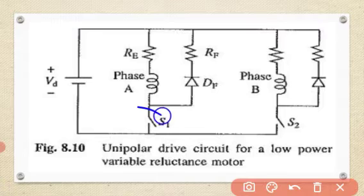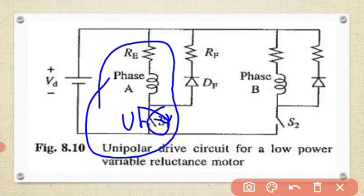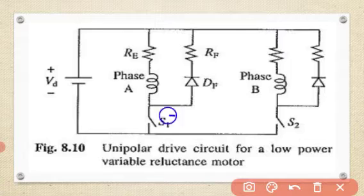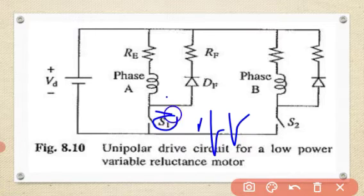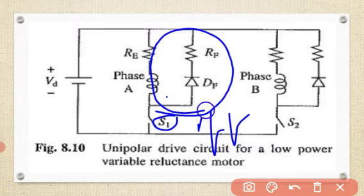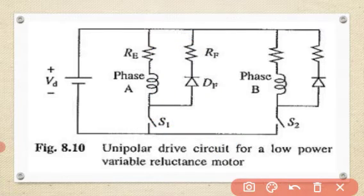When the semiconductor switch is turned on, VD is connected and the current builds up through RE, and phase A gets energized. When switch S1 is turned off, the energy stored in the inductance freewheels through Df, RF, and RE. The values of RE and RF have a specific relationship defined by an equation, which I will show next.